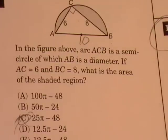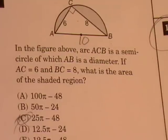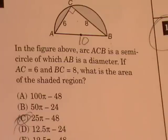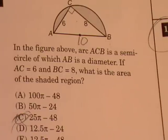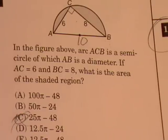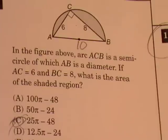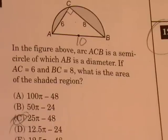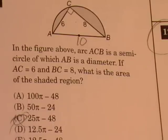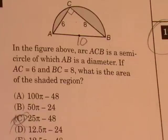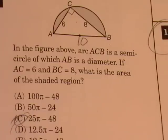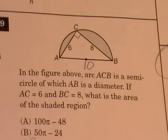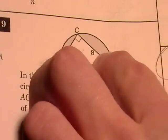This problem involves a combination of the any triangle feature of the SAT operating system and the general circles feature. It states, in the figure above, arc ACB is a semicircle of which AB is a diameter. If AC equals 6 and BC equals 8, what is the area of the shaded region?